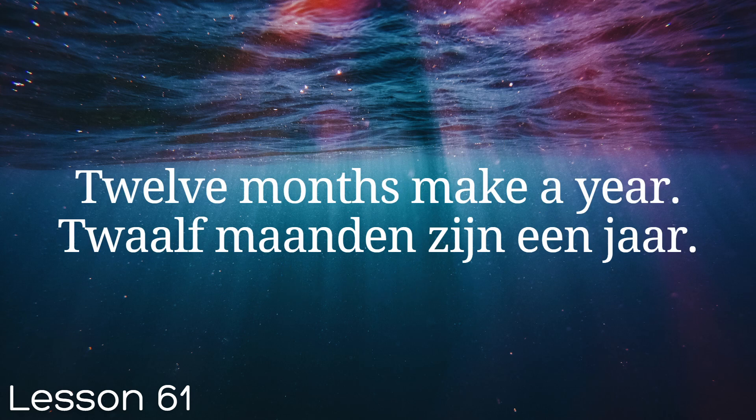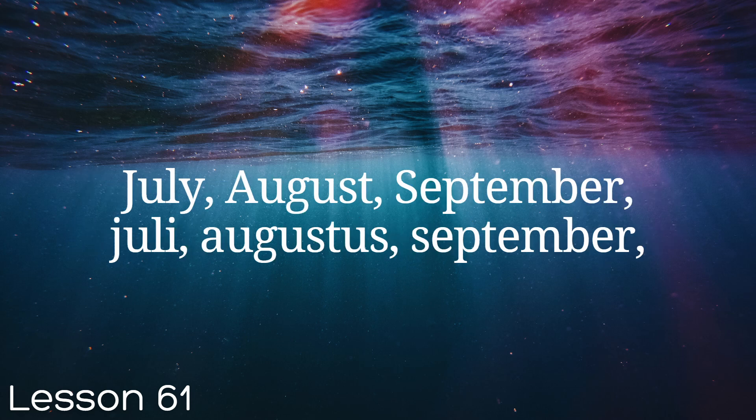Twelve months make a year. Twaalf maanden zijn een jaar. July, August, September. Juli, Augustus, September.